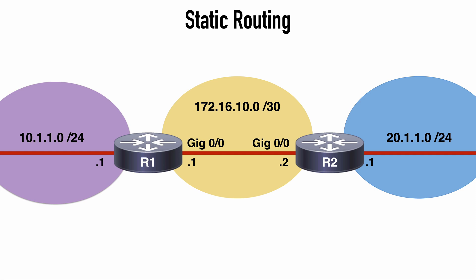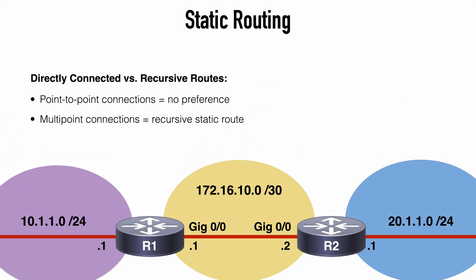Our router — let's say we're on R1 — instead of using gig 0/0, we're going to use the next hop IP address of 172.16.10.2. Our router is going to query its local routing information base, or its RIB, to locate a route toward that next hop IP address that we configure, and then find the associated interface to use. This requires that the next hop address you're specifying exists in the routing table. The difference between a recursive static route and a directly connected static route really comes down to whether you're indicating an outgoing interface or a next hop IP address, and which one you choose depends on your specific needs.